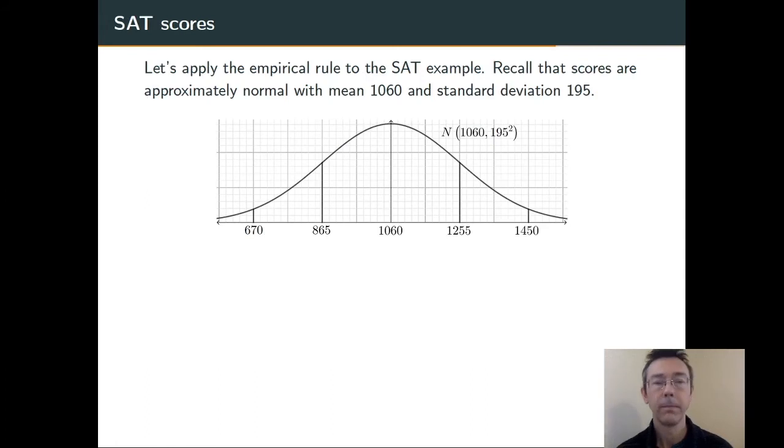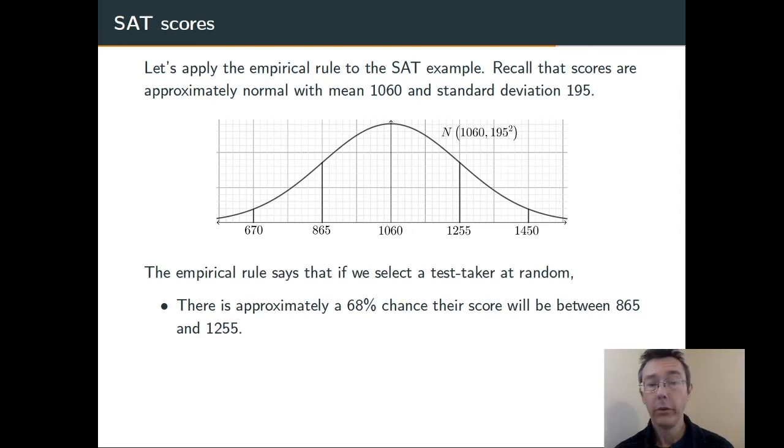Back to SAT scores. Let's apply the empirical rule to this distribution where we have a mean of 1060 and a standard deviation of 195. The empirical rule says if we go from one standard deviation below the mean to one standard deviation above, 865 to 1255, we get 68% of the probability. So, there's a 68% chance if we select someone at random that their score is going to be in that range.